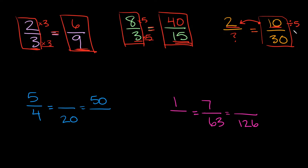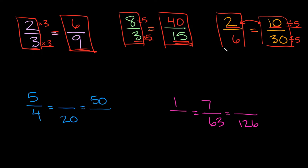Remember, whatever you do to the top you also have to do to the bottom. So if we're going to divide by five up here we also have to divide by five down here. What is thirty divided by five? Well that would be six. So two over six is equal to ten over thirty — these are equivalent fractions.